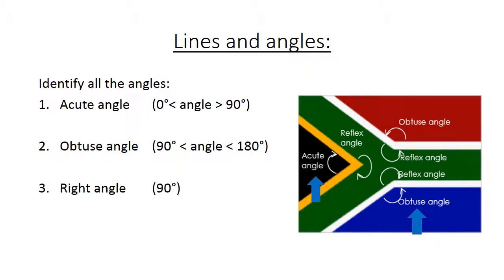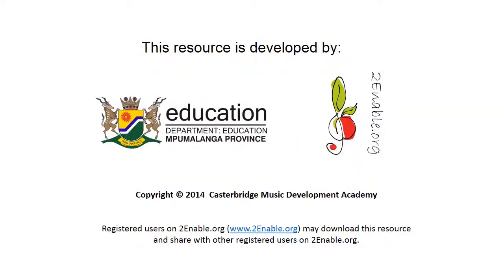A right angle is exactly 90 degrees. And a reflex angle is an angle more than 180 degrees but less than 360. And there we have a reflex angle.